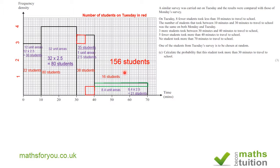They say calculate the probability that this student took more than 30 minutes to travel to school, so more than 30 minutes should be from there to there and the number of students on Tuesday would be 38 plus 16 and that would give us 54. So the probability that a child picked at random on Tuesday travels to school between 30 and 70 minutes is going to be 54 divided by 156, that's a probability of 0.346.